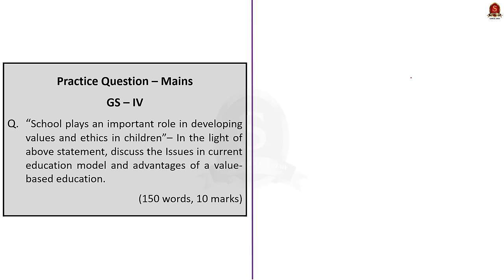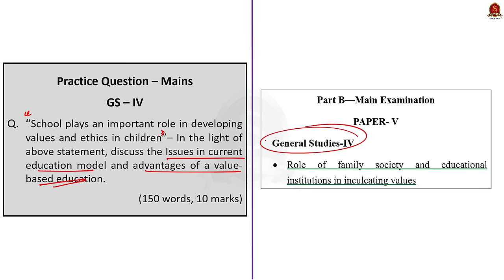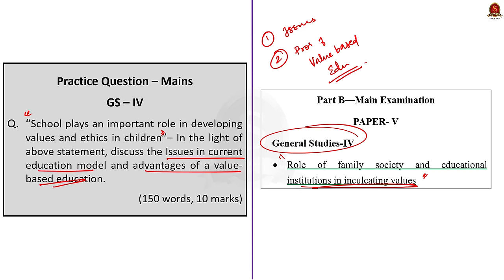The main question is: 'Schools play an important role in developing values and ethics in children. In the light of the above statement, discuss the issues in the current education model and also discuss the advantages of a value-based education.' This topic comes under GS Paper 4 under the syllabus of role of family, society, and educational institutions in inculcating values. This question demands us to answer the issues in the current education model, and in the second part, enumerate the advantages of value-based education. We can divide the body of the answer into two parts.